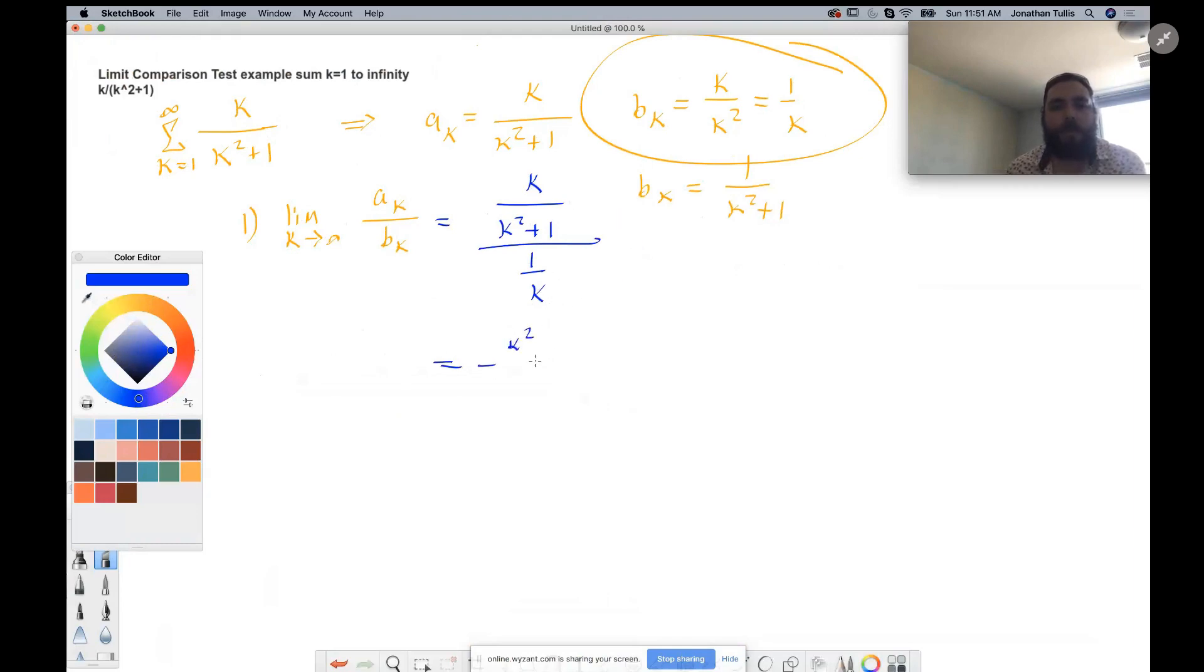So we'll get k squared over k squared plus one. And also we are taking the limit as k goes to infinity. So let's not forget to write that every time.